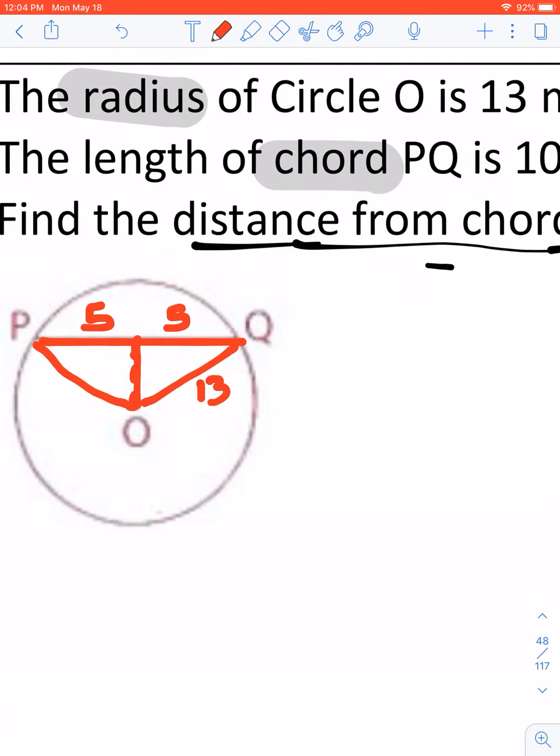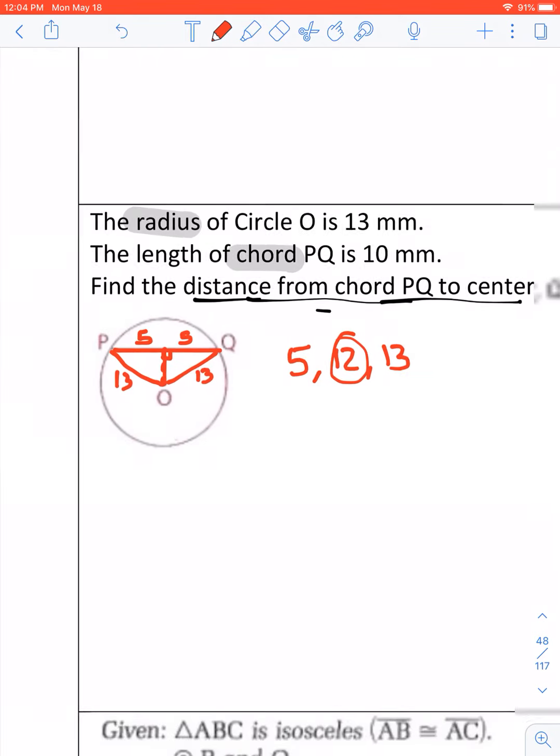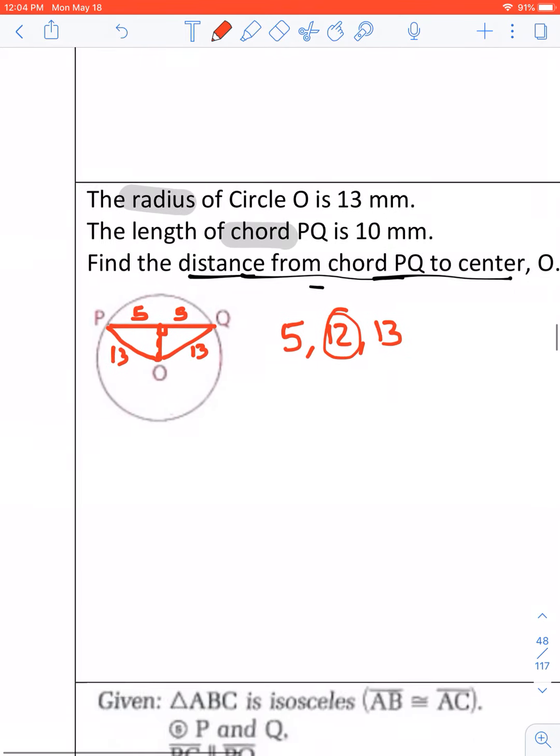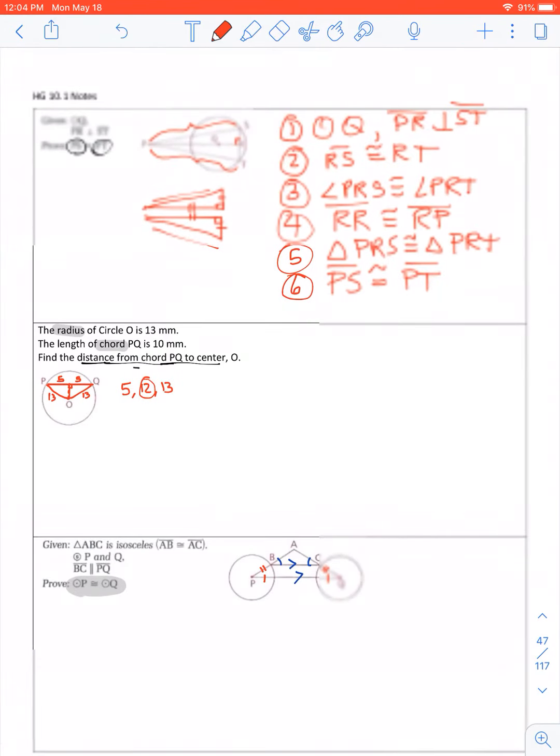Because this line, which is going to be perpendicular, has to bisect that side. So this is 13. So now we can see, oh, this is the 5, 12, 13 family. So my answer is 12. Okay? And there'll be a few more proofs. I'm not going to go through another proof. Let's get you into the proof. We'll be right back.